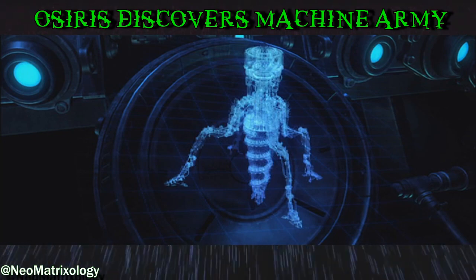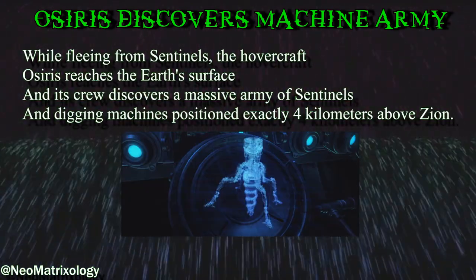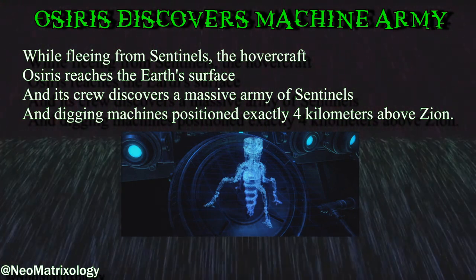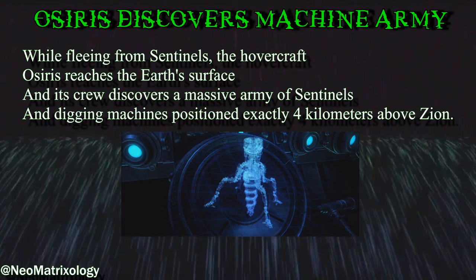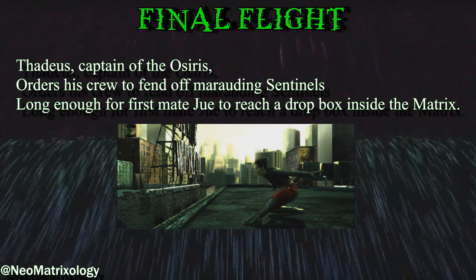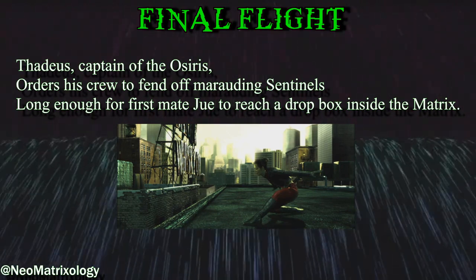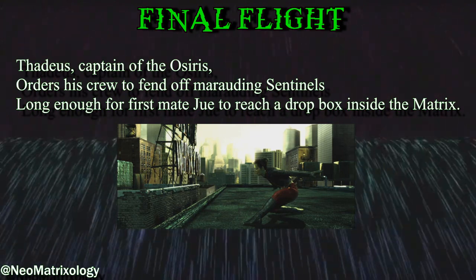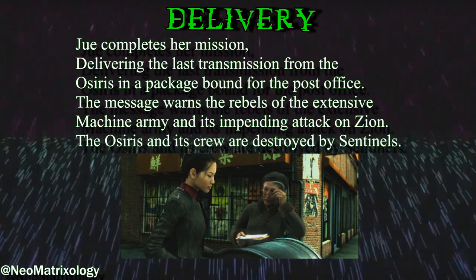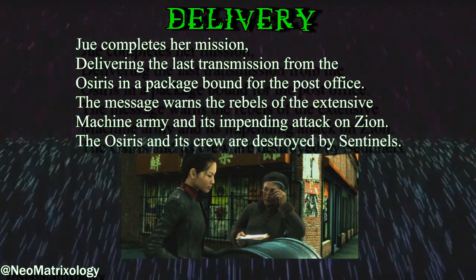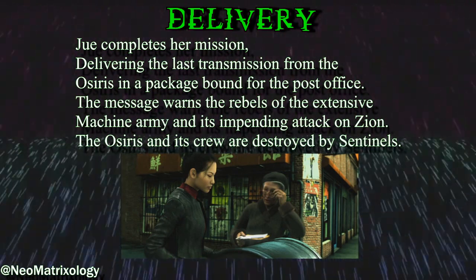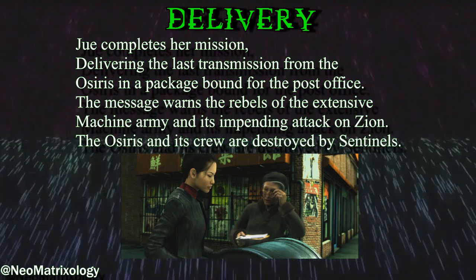Osiris discovers Machine Army: while fleeing from Sentinels, the hovercraft Osiris reaches the Earth's surface and its crew discovers a massive army of Sentinels and digging machines positioned exactly four kilometers above Zion. Final flight: Thaddeus, captain of the Osiris, orders his crew to fend off marauding Sentinels long enough for first mate Jouet to reach a drop box inside the Matrix. Delivery: Jouet completes her mission, delivering the last transmission from the Osiris in a package bound for the post office. The message warns the rebels of the extensive Machine Army and its impending attack on Zion. The Osiris and its crew are destroyed by Sentinels.